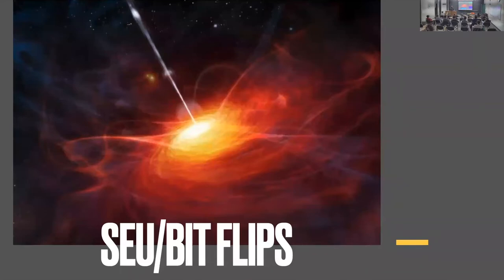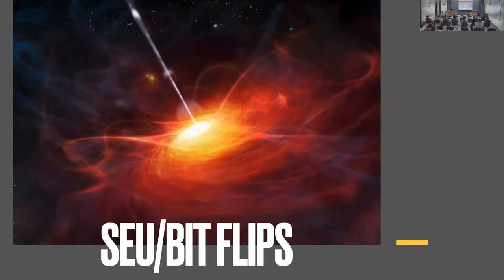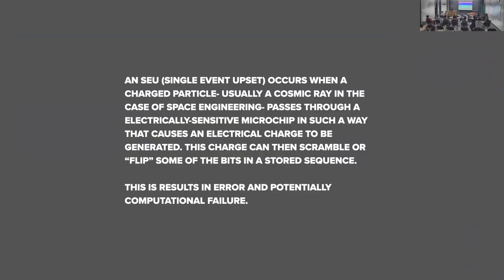SEUs — Single Event Upsets — and bit flips. There are many types of failures in space associated with radiation and computer error. An SEU occurs when a charged particle, like a cosmic ray, passes through an electrically sensitive component on a satellite, adding or subtracting charge from a circuit. This is important because the state of charge governs the compute of a system. If you change the state of charge, you change the compute. If you change the compute, you change the data. And if you change the data, you can fall out of orbit.